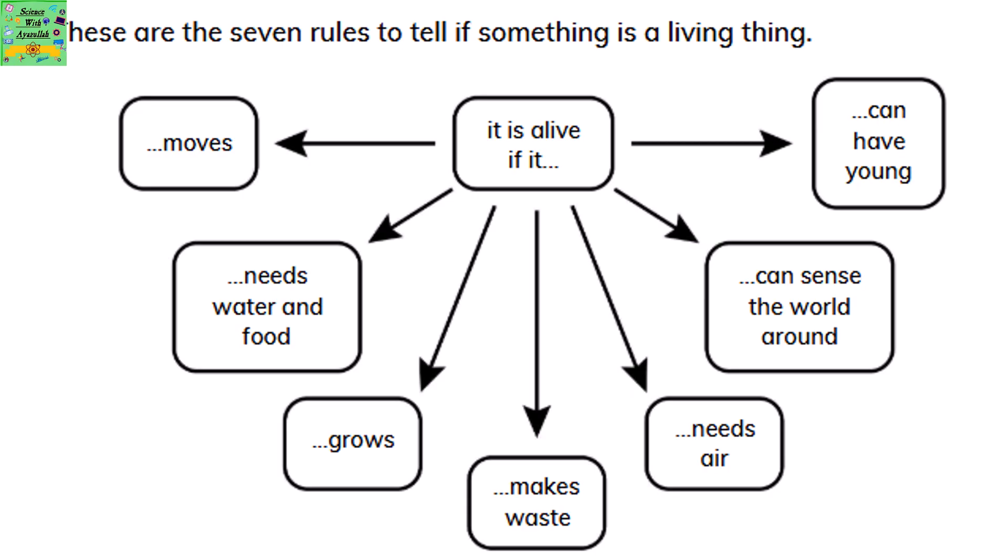These are the 7 rules to tell if something is a living thing. If it is alive, it moves, it needs water and food, it grows, it makes waste, it needs air, it can sense the world around it and it can have young.